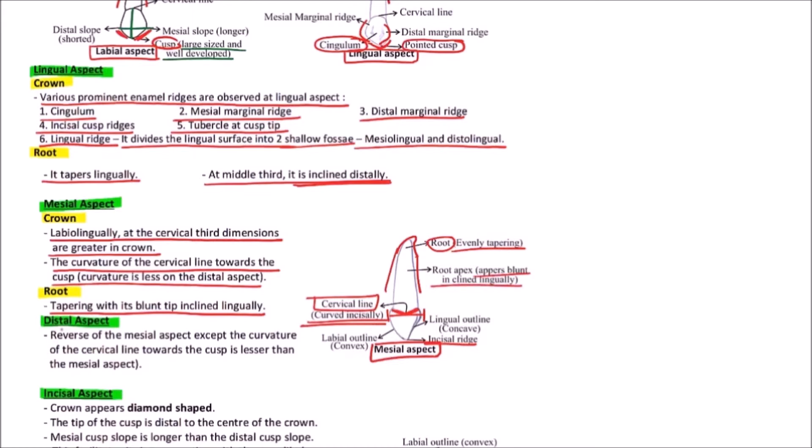The distal aspect is reverse of the mesial aspect, except the curvature of the cervical line towards the cusp is lesser than the mesial aspect.